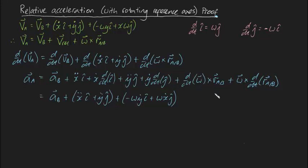Now let's talk about this right here. Well, the derivative of your angular velocity vector, by definition, is your angular acceleration vector. And then that's crossed with r_ab.